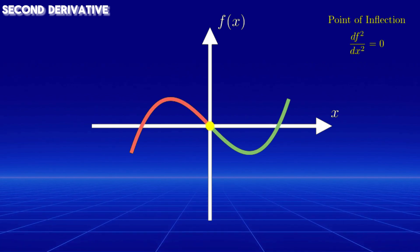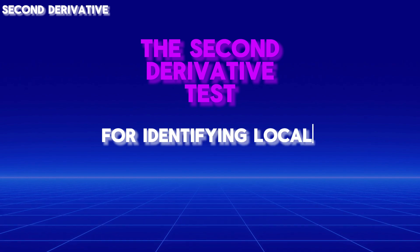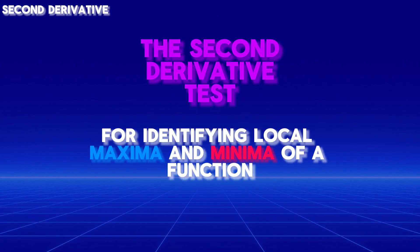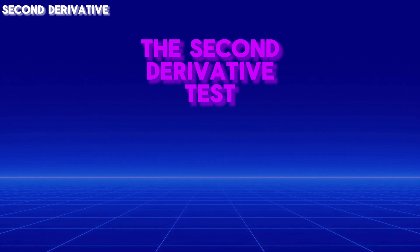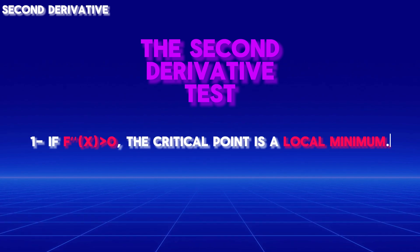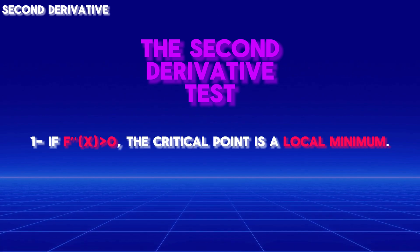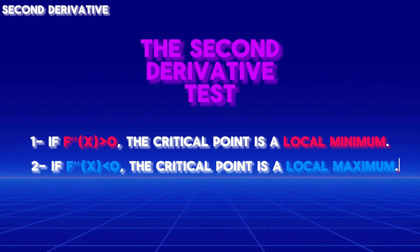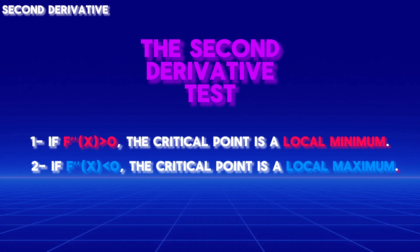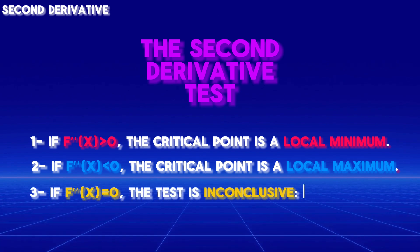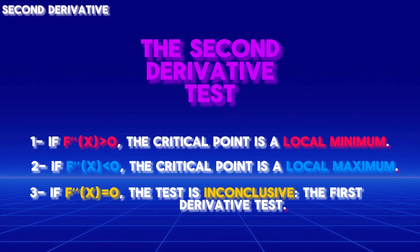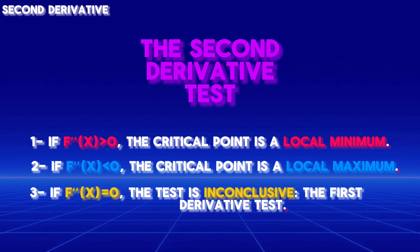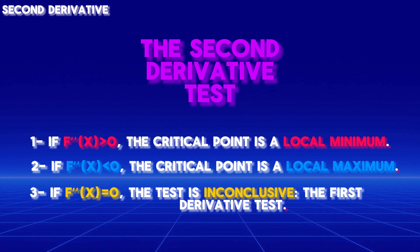The second derivative gives us another powerful tool: the second derivative test for identifying local maxima and minima of a function. For this test, we evaluate the second derivative at each critical point. If the second derivative is greater than zero, the critical point is a local minimum. If it's less than zero, the critical point is a local maximum. If the second derivative equals zero, the test is inconclusive — in such cases, you may need to use another method, such as the first derivative test, to determine if the point is an inflection point, a local minimum, or a maximum.